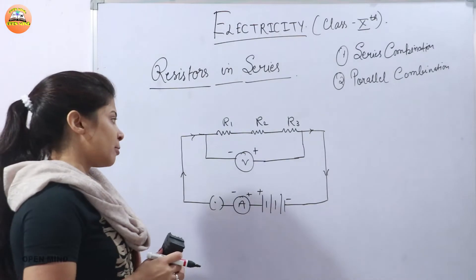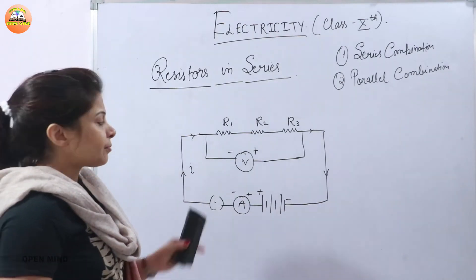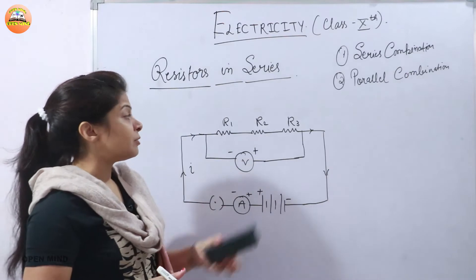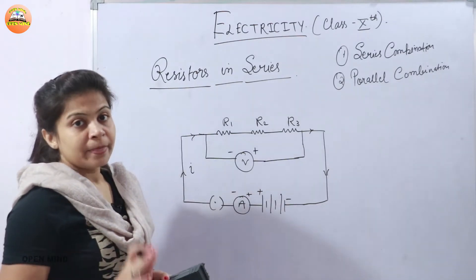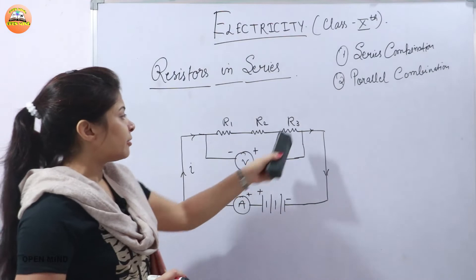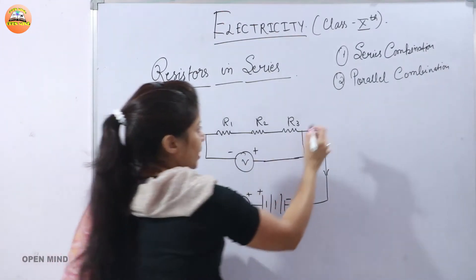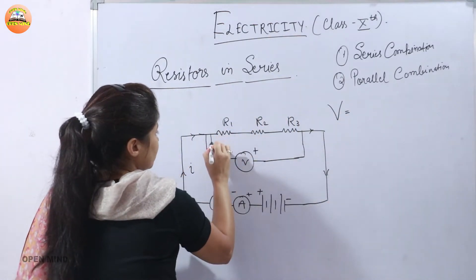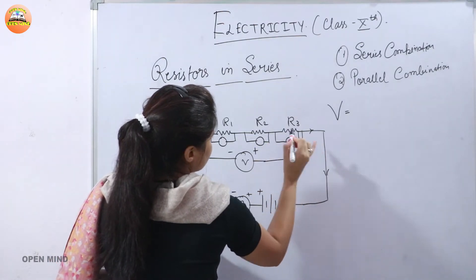In this series circuit, suppose current I is flowing. If you observe the ammeter, you will find there is no change in the amount of current passing through R1, R2, and R3 — meaning the current flowing through each resistor remains the same. However, the potential difference across each resistor is different, and the total potential difference equals the sum of the individual potential differences.